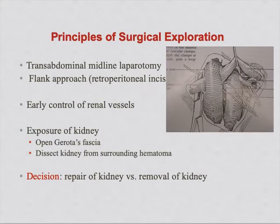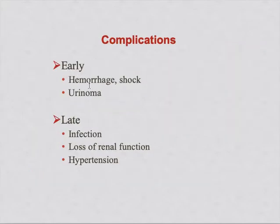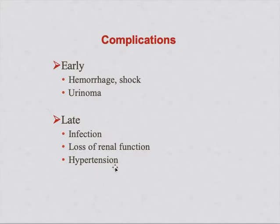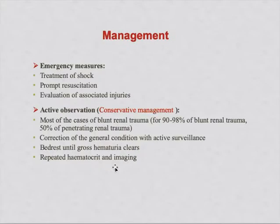Whenever there is any injury to the kidney there can be complications. Early complications include hemorrhage, shock, and urinoma — collection of urine. Late complications include infection, loss of renal function, and hypertension. For hematuria or hematoma they use a cystoscope or catheter. For urinoma they evacuate it. Hypertension can occur because renal parenchyma is injured, and sometimes there is post-traumatic aneurysm formation of the renal artery.